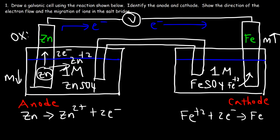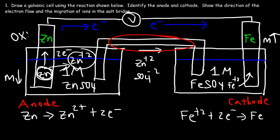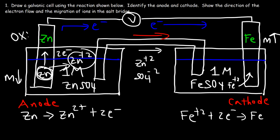At the salt bridge, cations travel towards the cathode and anions travel towards the anode. Zinc ions enter the solution and eventually flow through the salt bridge. If the salt bridge is filled with zinc sulfate, the zinc ions travel towards the cathode and the sulfate ions go towards the anode. So positively charged ions flow towards the cathode and negatively charged ions flow towards the anode — that is the migration of ions in the salt bridge.